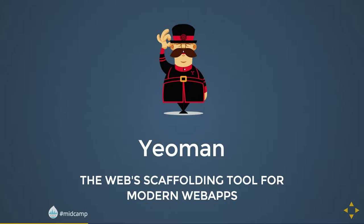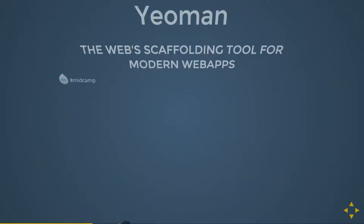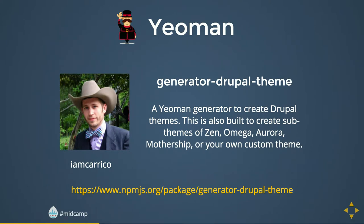It's a really awesome way of basically spinning up scaffolding for a site from scratch, or a theme. I use it regularly to create local environments using a plugin called generator-vamped — V-A-M-P — it's a way of creating a Vagrant environment to dev on locally. I'm one of the maintainers on that project. Another one I recommend is generator-drupal-theme, maintained by Iam Carico from Four Kitchens.